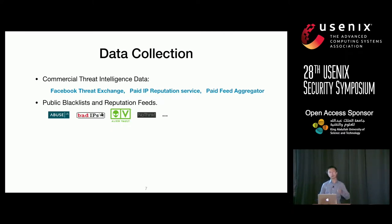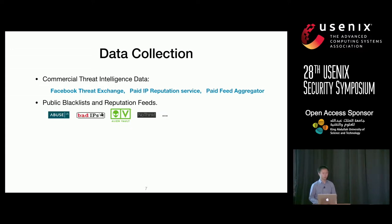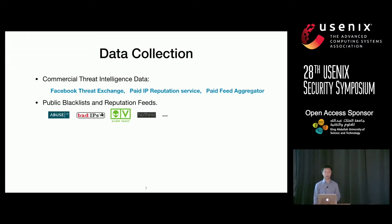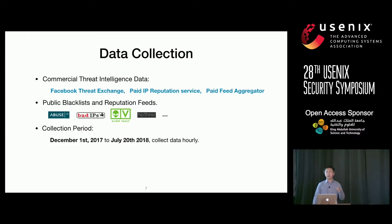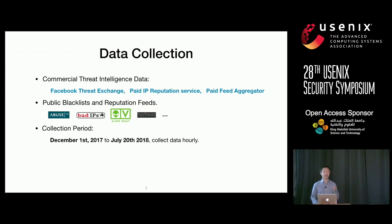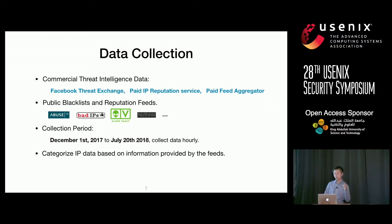Our data collection includes both commercial and public threat intelligence data. Our commercial data comes from three sources: Facebook Threat Exchange, a paid IP reputation service, and a paid feed aggregator — the last two anonymized due to provider agreements. Our data collection period runs from December 1st, 2017 to July 20th, 2018, and we collected all data hourly. For the IP data, we further categorize it based on information provided by the feeds themselves and conduct analysis within each category.